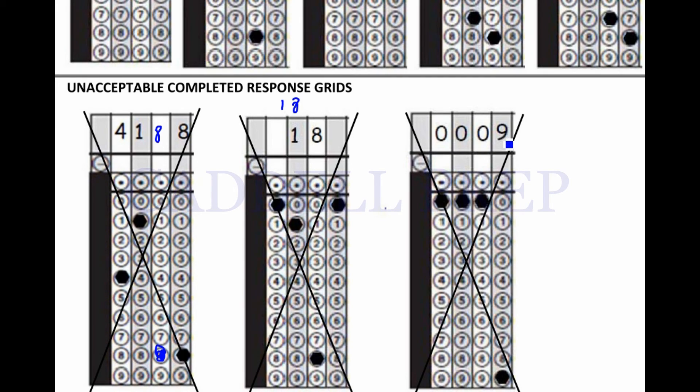Then, also, the number 9, for example. Just start with the 9 here and bubble the 9. Do not write 0s in front of it.